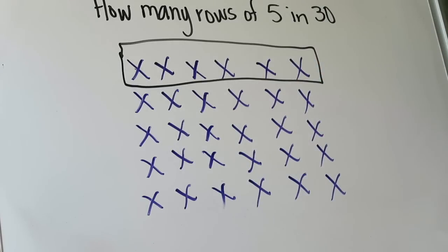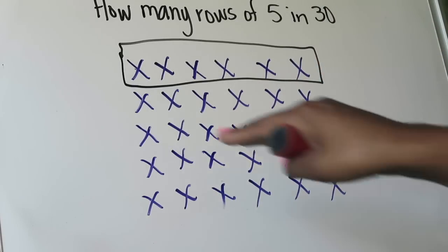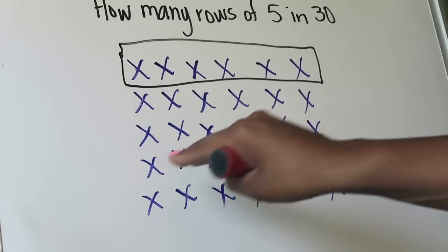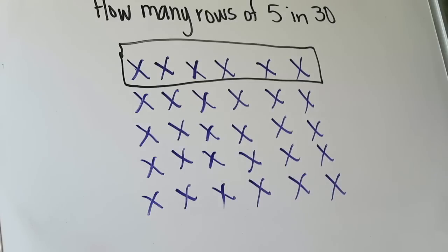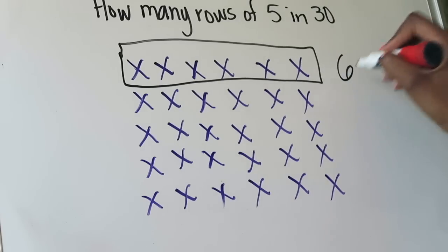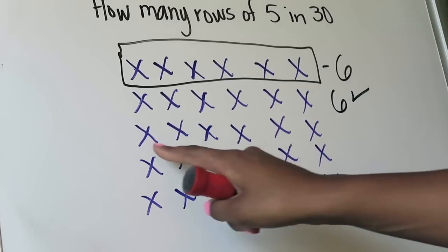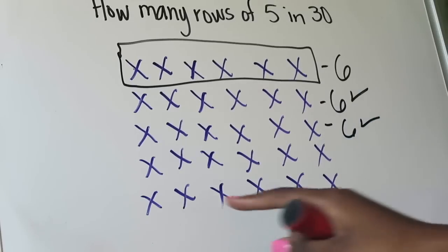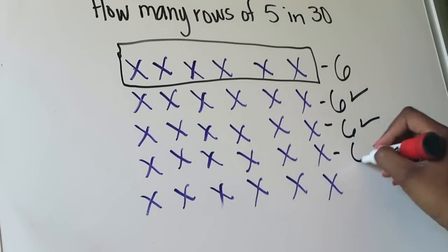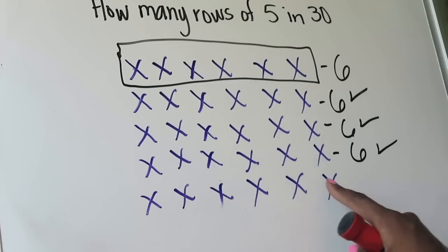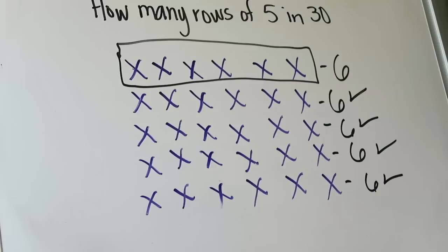Counting across one row, I get one, two, three, four, five, six. And because I was very careful and placed my counters down one at a time, I know that each of the following rows — row two, row three, row four, and row five — all have six. Just to prove that point, I'll count each row: six, check; six, check; six, check; six, check. So I know that if I have five rows and 30 counters, each of those rows will contain a total of six counters each.